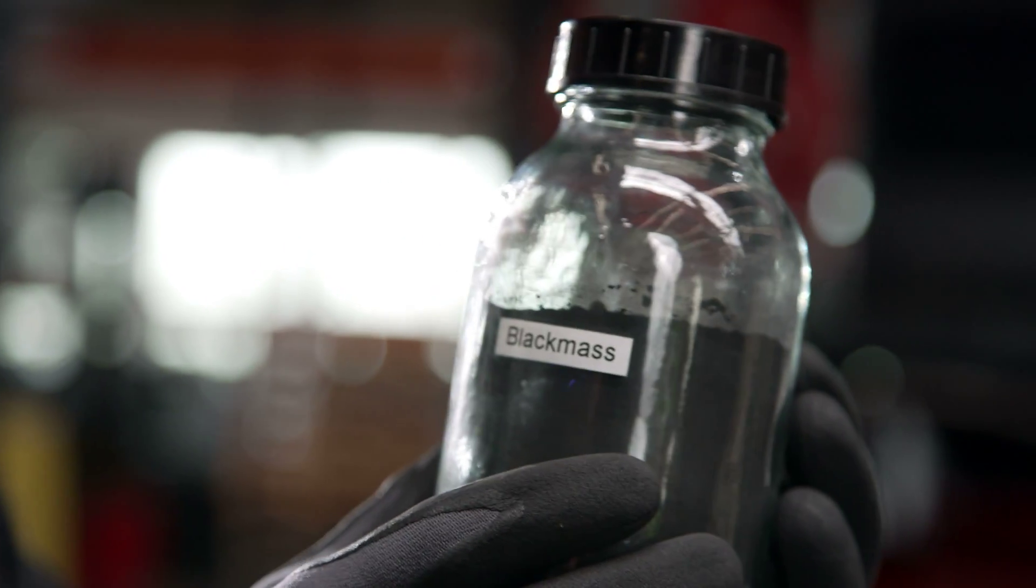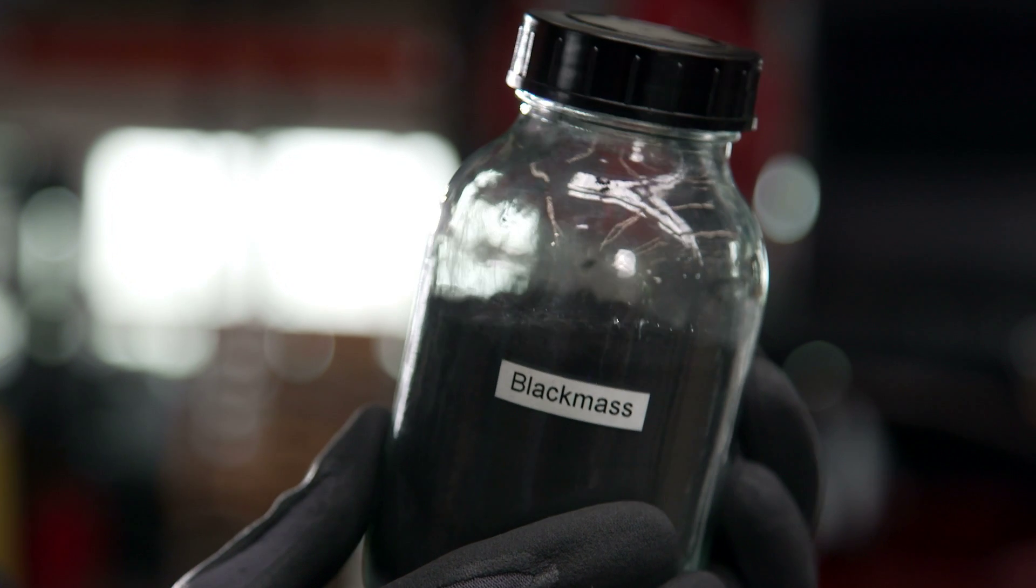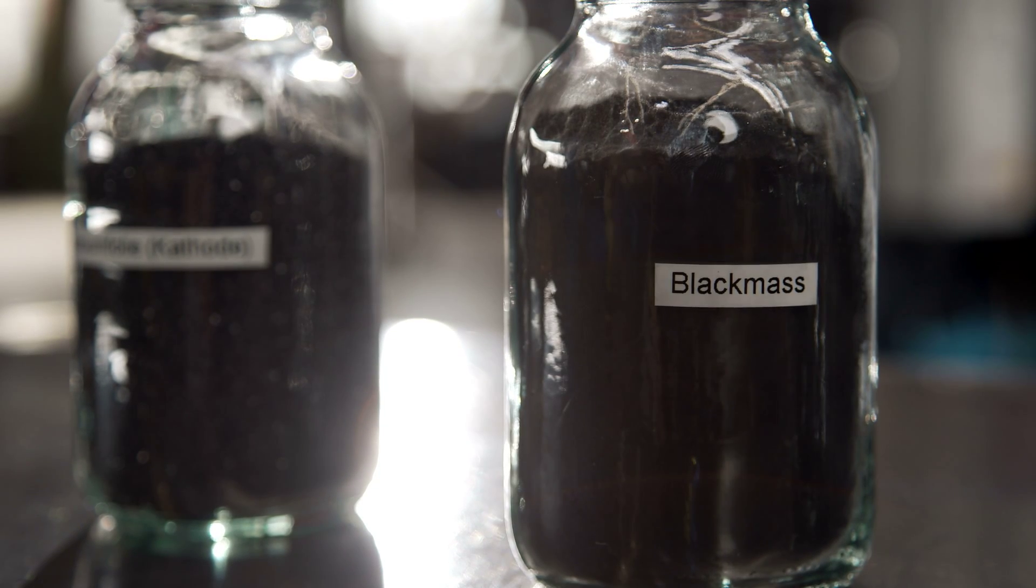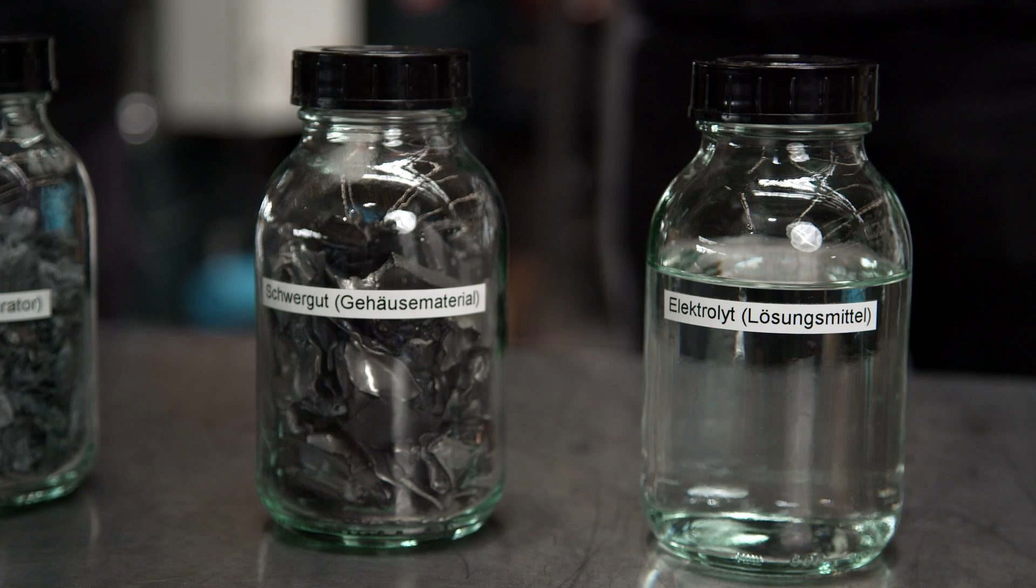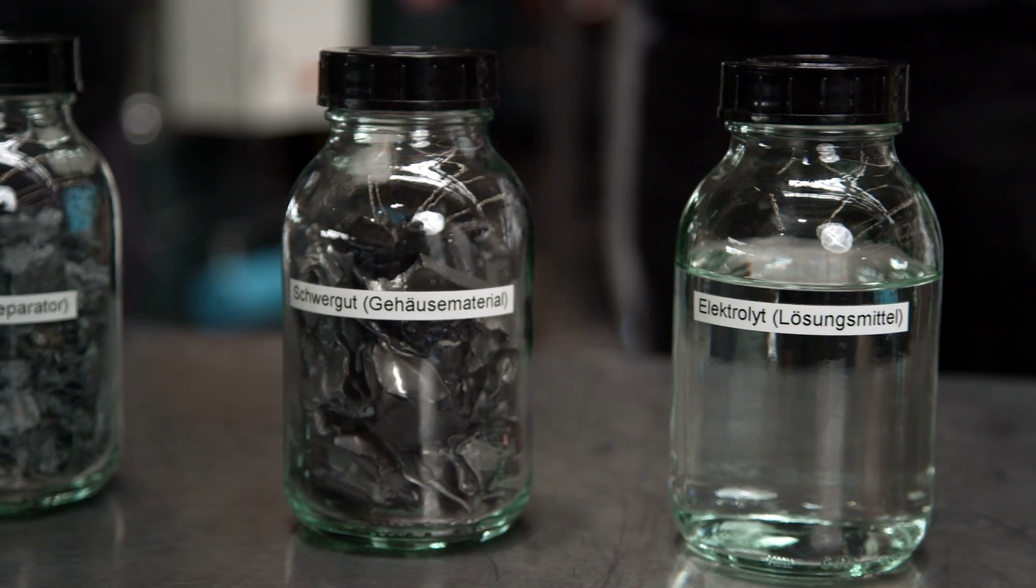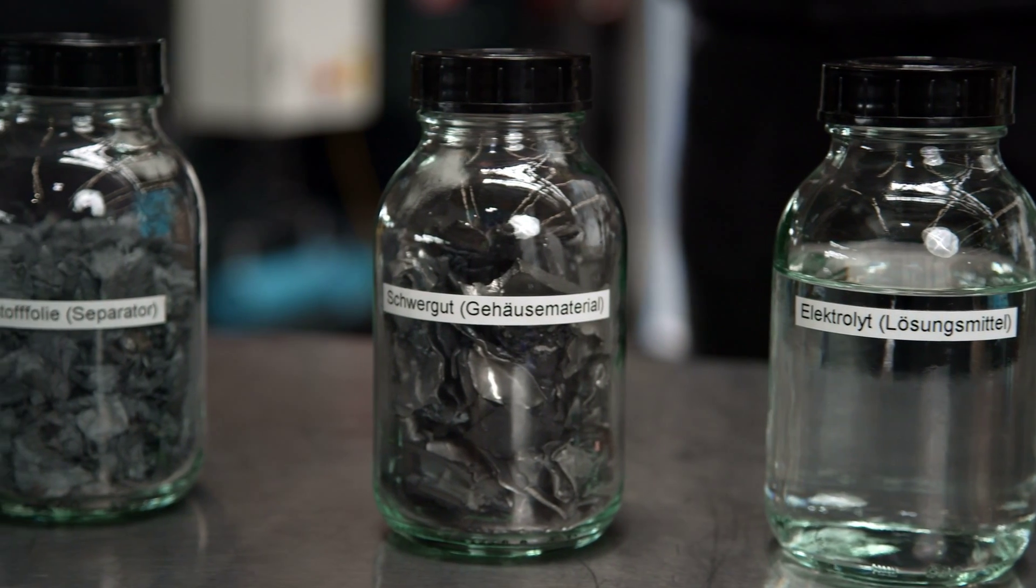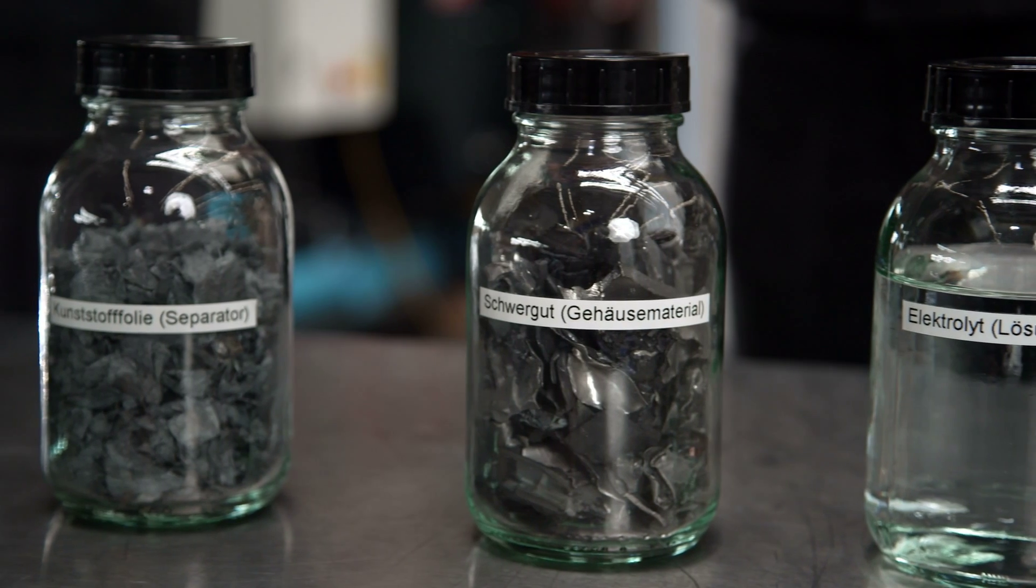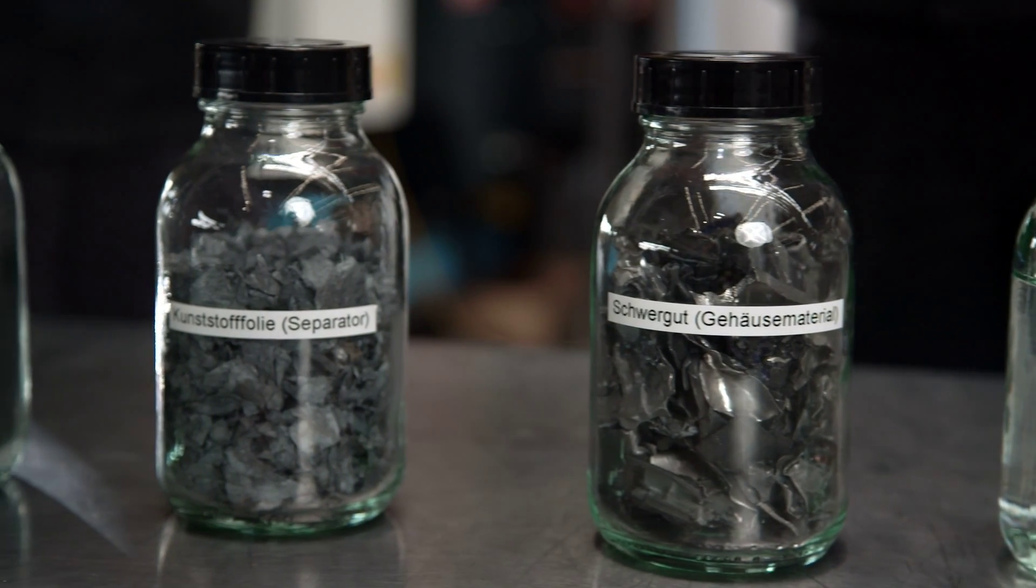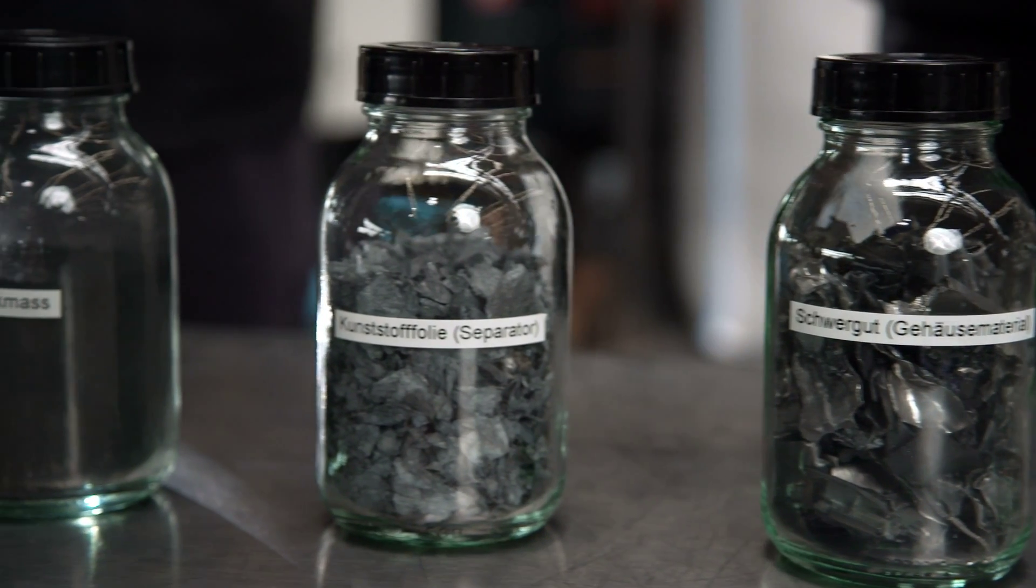In addition to the liquid electrolyte, various groups of solids are produced: the shredded battery casing, the separator foil, the black mass, and the shredded copper and aluminum foils of the cathodes and anodes.